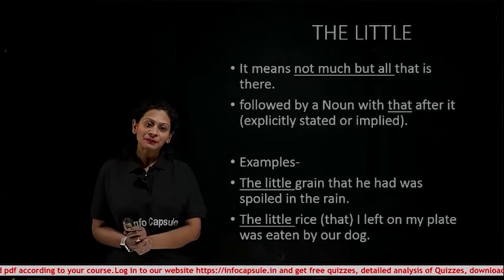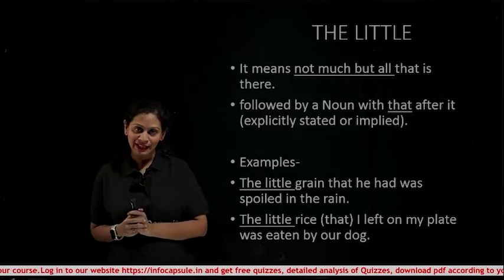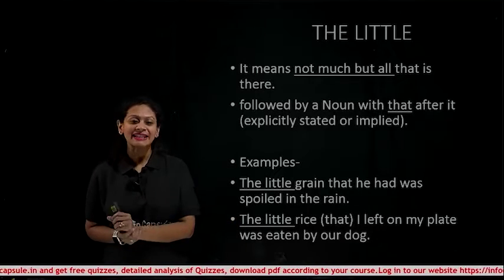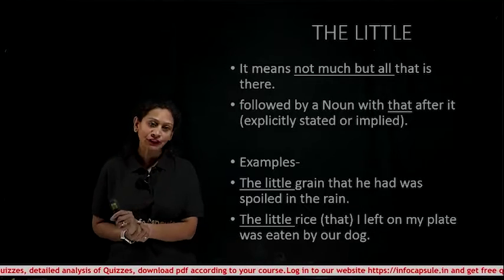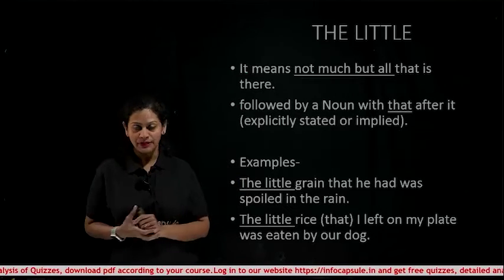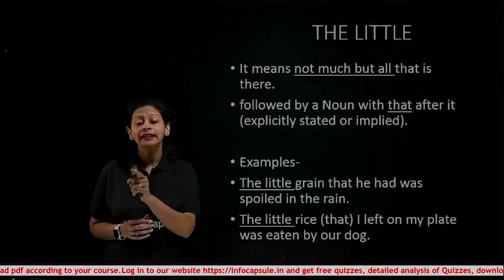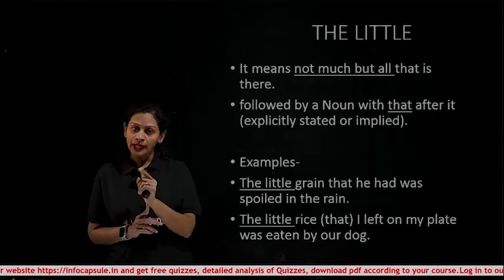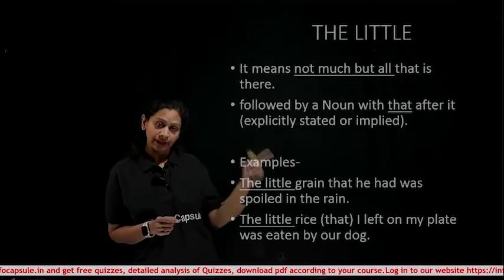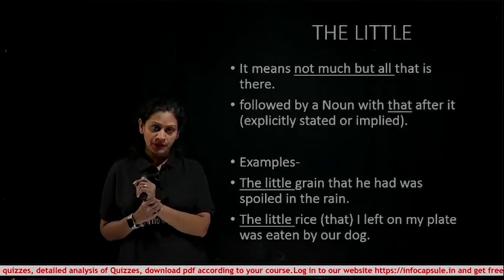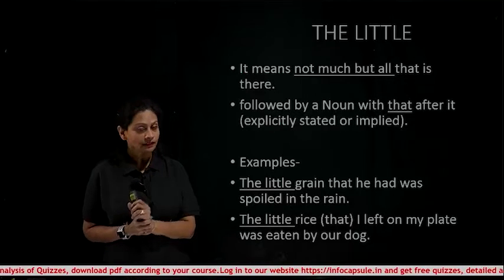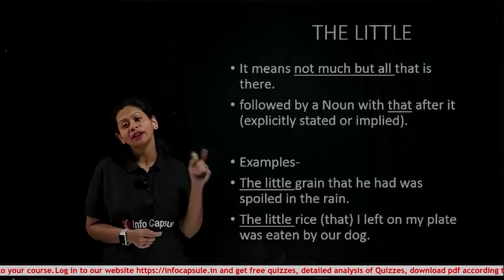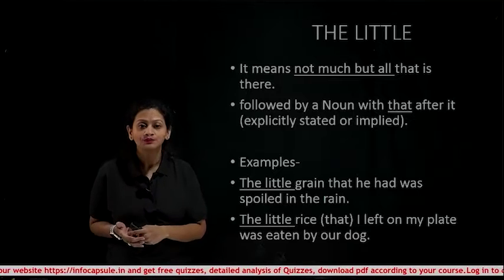Then next comes 'the little.' The little means not much but all that is there — matlab thoda se thoda, but jitna hai, woh poora. And 'the little' is followed by a noun with 'that' after it. This will be clear with the examples. The example says: 'The little grain that he had was spoiled in the rain.' The little is the context, grain is the noun, followed by 'that.'